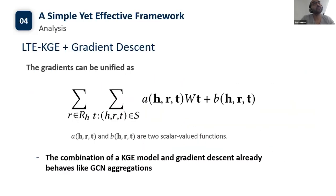To understand why LTE-KGE models perform similarly to GCN-based KGC models, we show that LTE-KGE behaves like a GCN-based model with a single GCN layer as encoder, while not aggregating information from neighborhoods explicitly. Specifically, the gradients of LTE-KGE models can be unified in a formulation shown in the slides, which has a very similar structure to the GCN aggregation and update procedure. Therefore, the combination of a KGE model and gradient descent already behaves like GCN aggregations, making additional explicit aggregations unnecessary. This explains why LTE-KGE achieves similar performance to GCN-based KGC models.